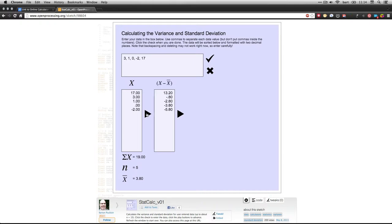Click the triangle here, the button. And now what you get are deviations from the mean. So you take each score and you subtract the mean. So 17 minus 3.8 is 13.2. 3 minus 3.8 is -0.8, and so on.